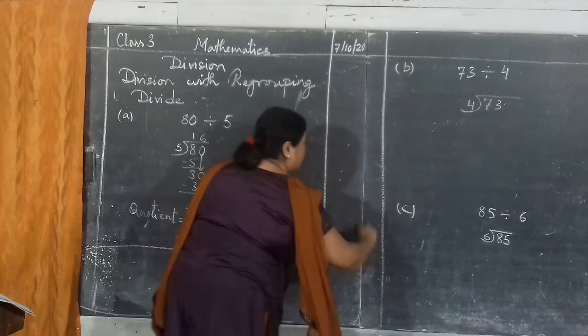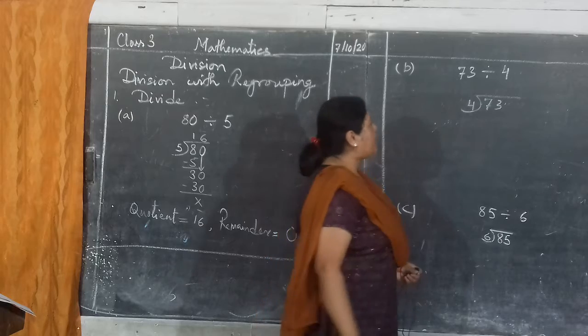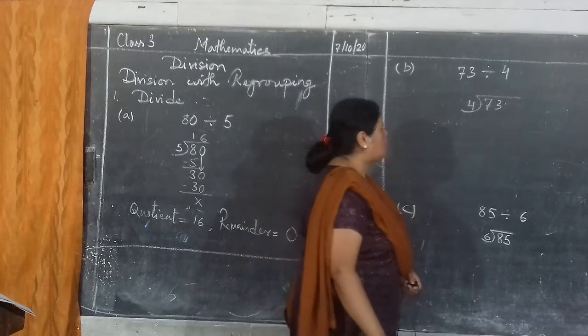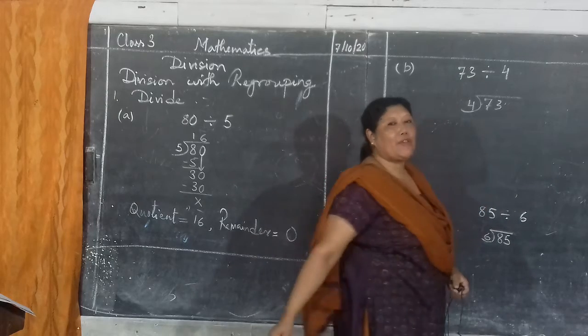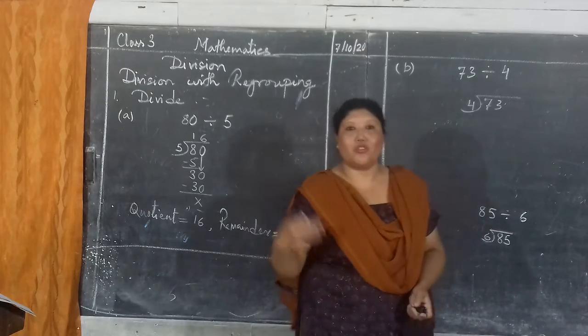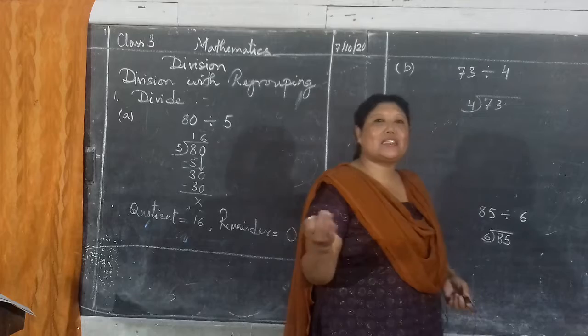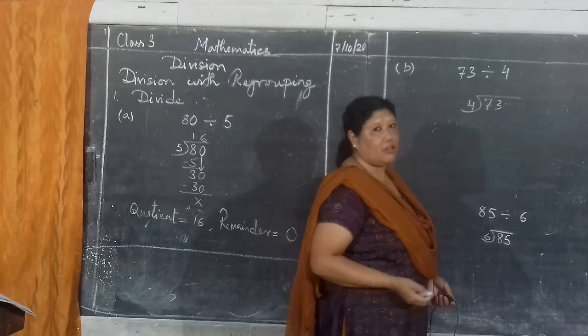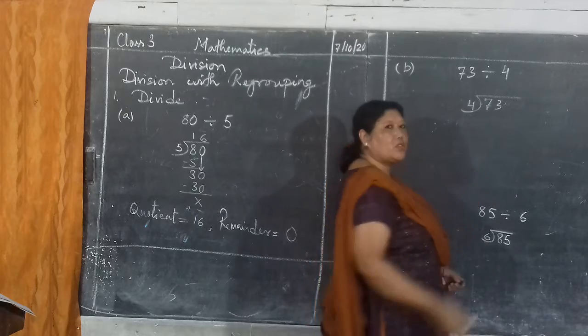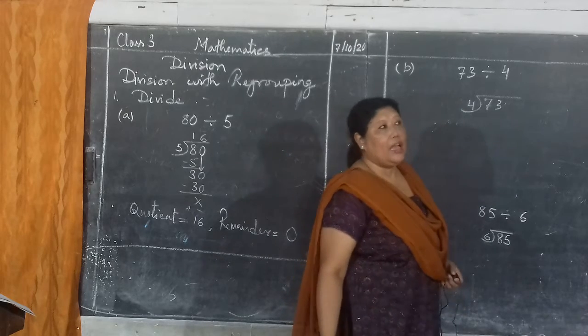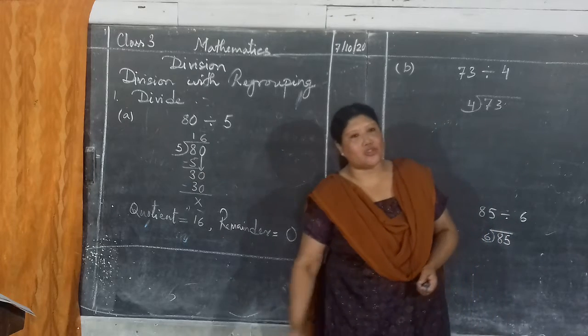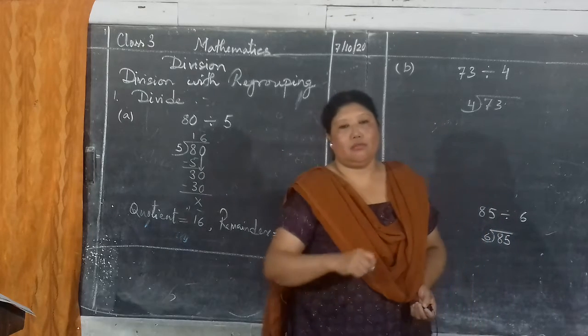Second one: 73 divided by 4. Same method you have to apply. So divide 7 by 4. 4 ones are 4, 4 twos are 8. 8 is bigger than 7, so can you divide? You cannot. Why? Because you cannot subtract.